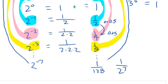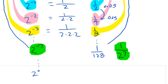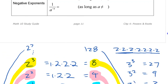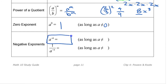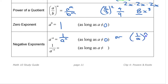This is the rule we write up above: 2 to the negative 7 equals the reciprocal of 2 to the positive 7. For any number: 2 to the negative n equals 1 over 2 to the positive n. Going back up to the list: a to the negative n is the same as 1 over a to the positive n, as long as a is not 0. Or you could write it as 1 over a to the n — either way.